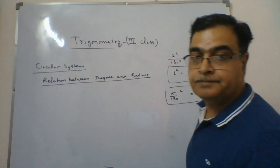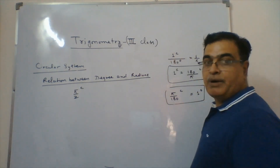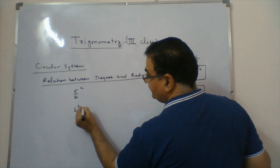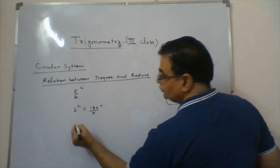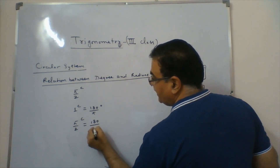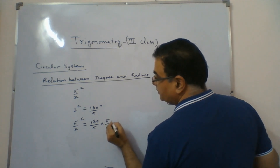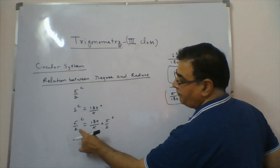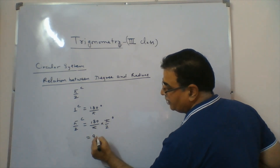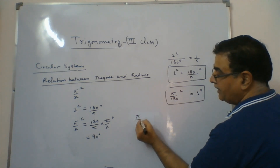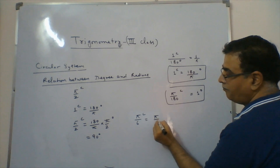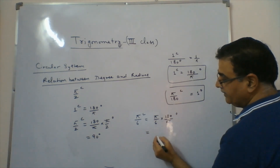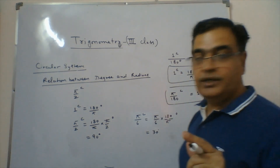The same way, radian can be converted to degree. If I say π/2 radian and want to convert to degree: since 1 radian equals 180/π degrees, π/2 radian equals 180/π × π/2. The π's cancel out and it comes to 90 degrees. Similarly, π/6 radian: π/6 × 180/π — π cancels — gives 30 degrees.